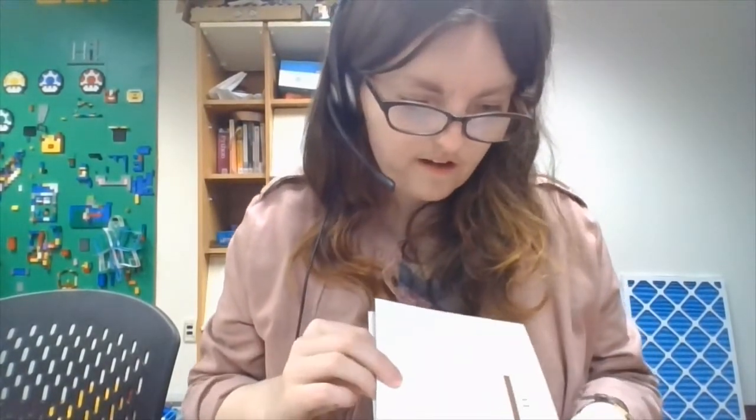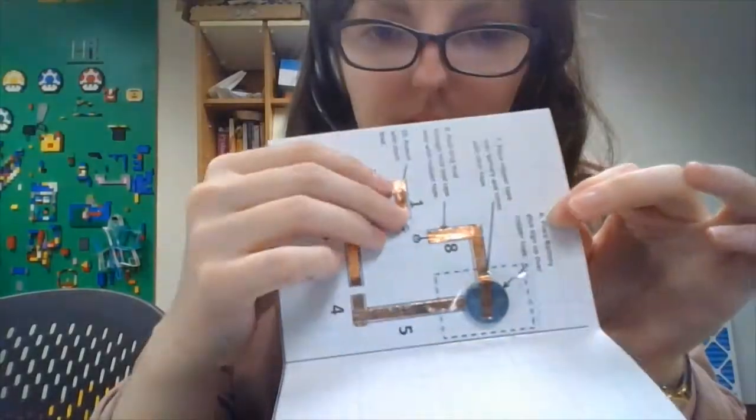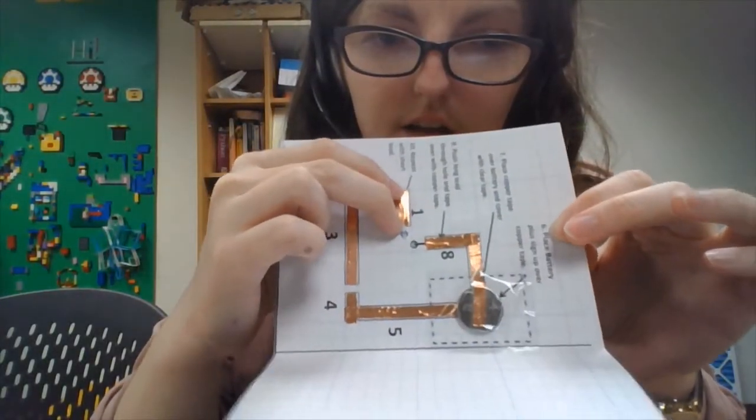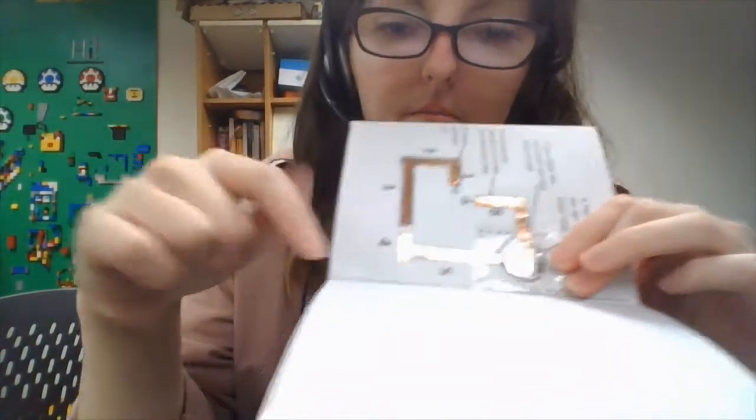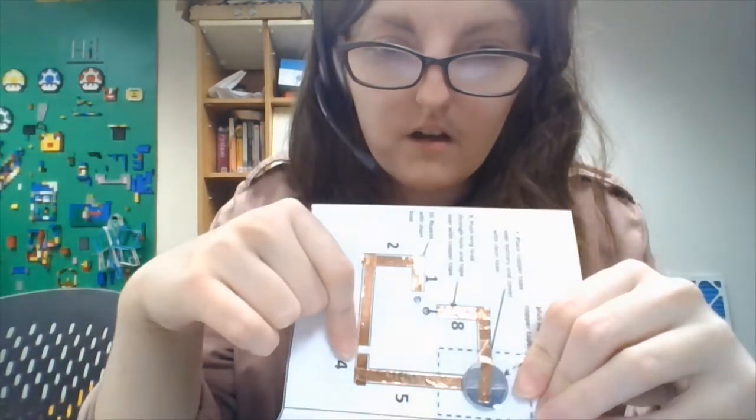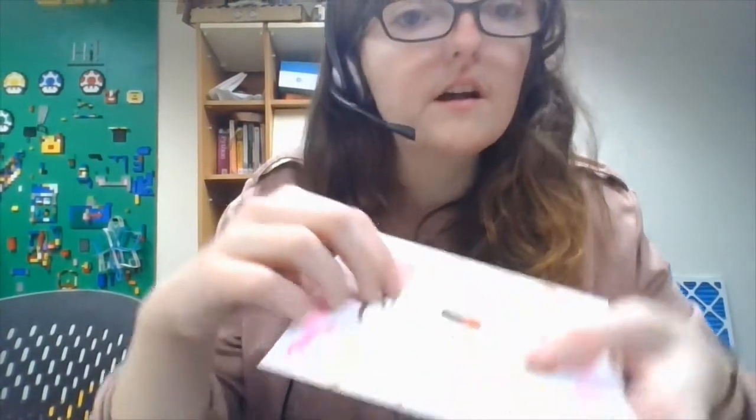If you notice any issues with your card not lighting up, the first two things to check is that your leads are secure enough. Sometimes if the copper tape pops off, it won't conduct. Another thing is make sure the battery is plus side up. Make sure that this space is not covered up. And make sure that these two wires, the two leads, are not touching at all. If they touch, they'll short out.